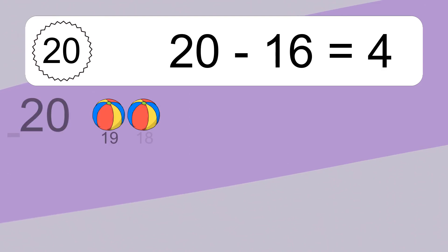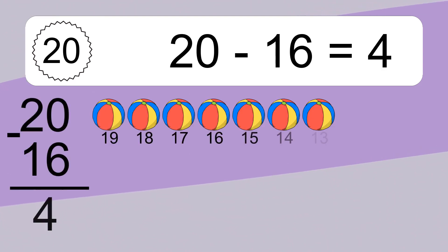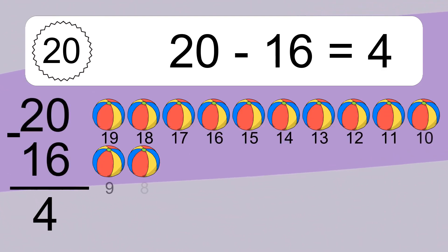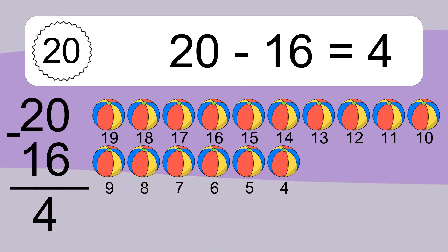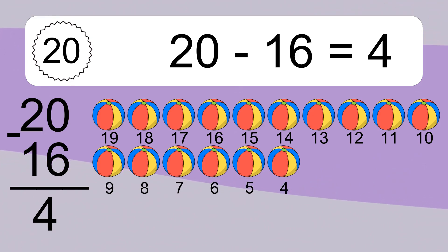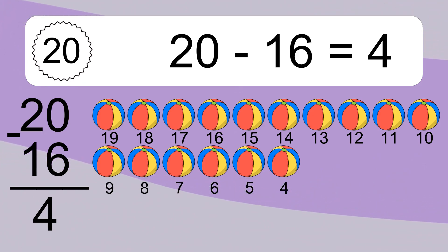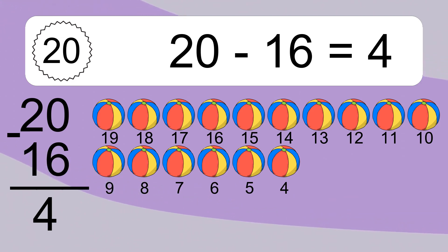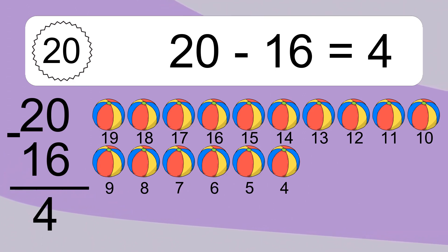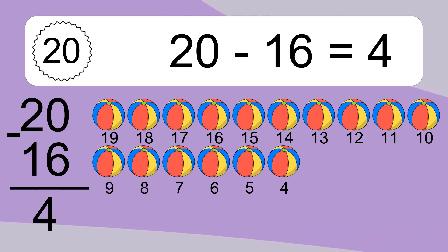20 minus 16 equals 4. Let's count it: 19, 18, 17, 16, 15, 14, 13, 12, 11, 10, 9, 8, 7, 6, 5, 4.